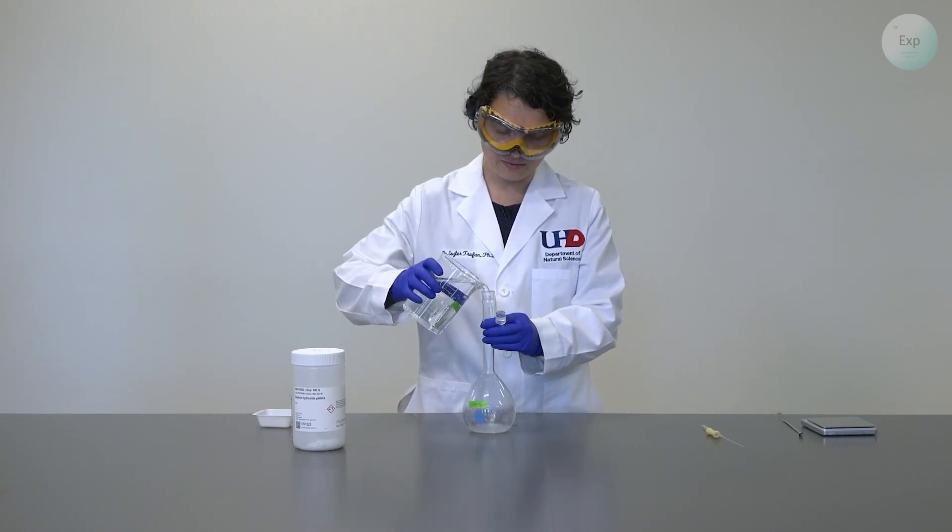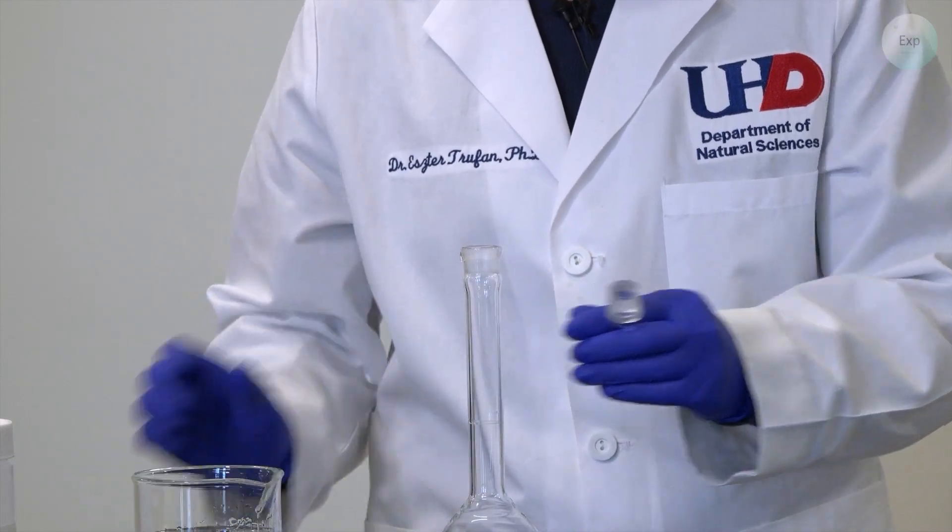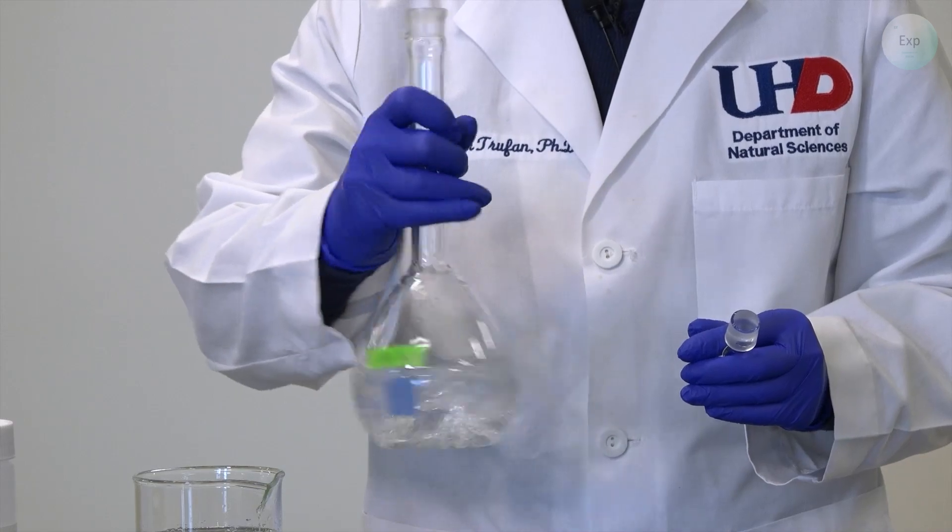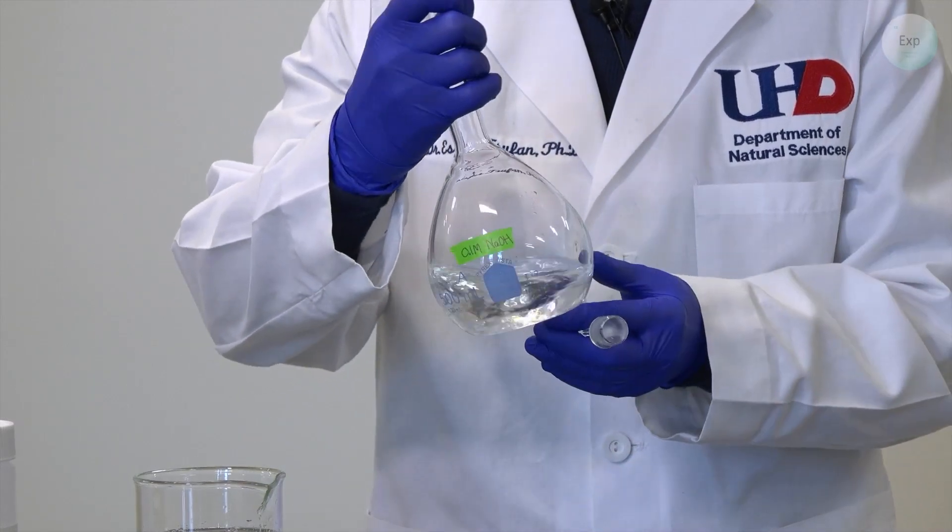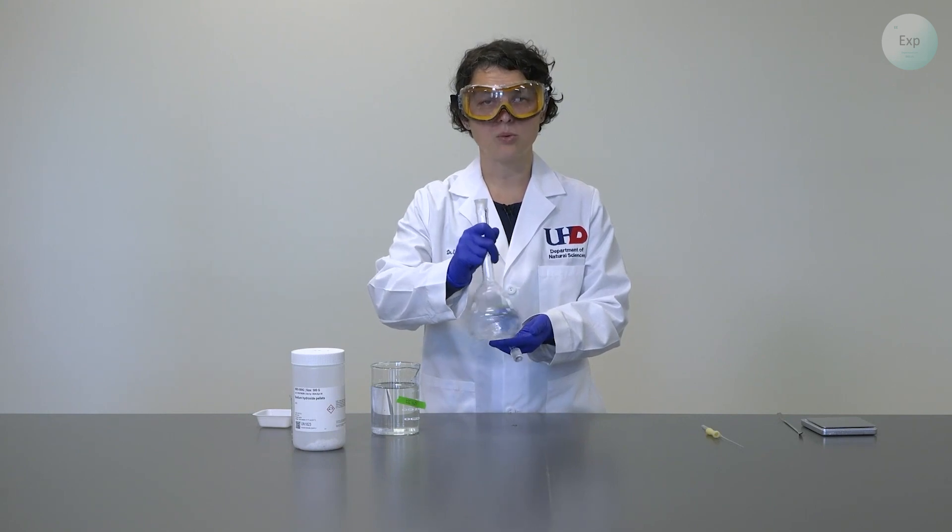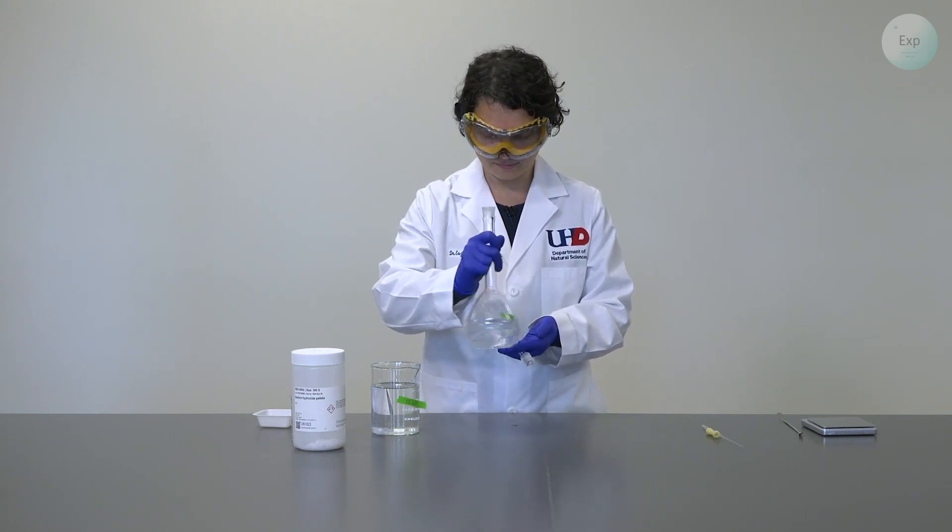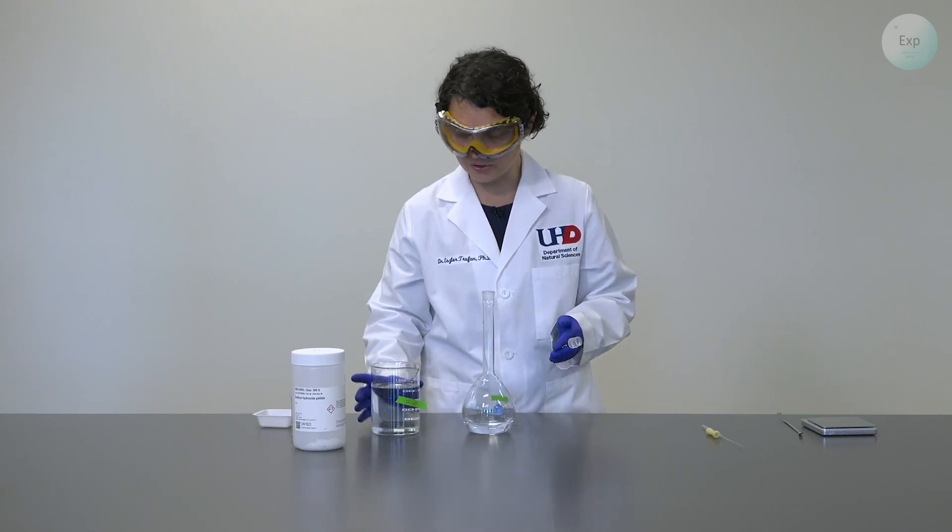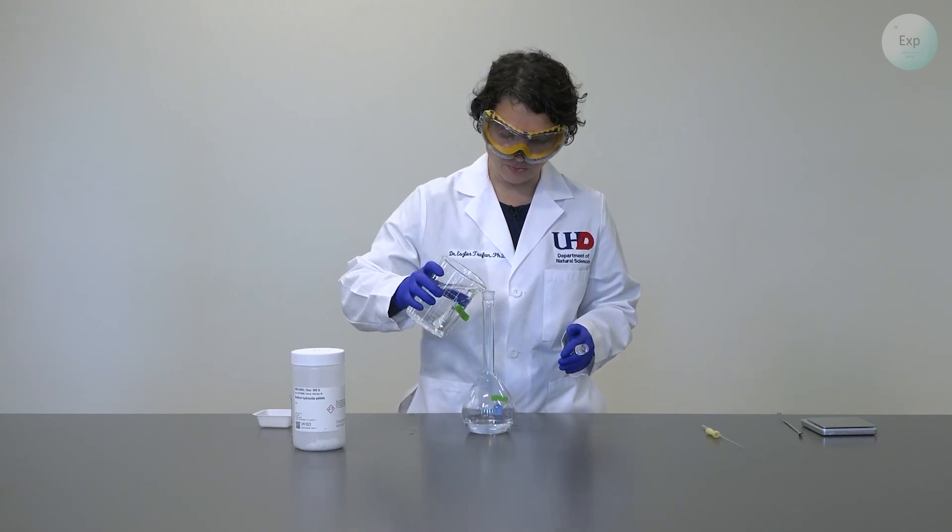So now we start adding increments of water. And with every addition, we shake our volumetric flask really well. The aim is to dissolve the sodium hydroxide in as little water as possible. If it doesn't work on the first addition, we add more deionized water.